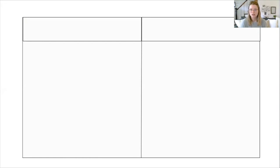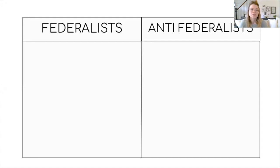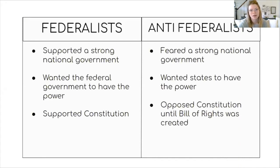We might conclude that a lot of anti-federalists were concentrated in the south, but for the evenly divided or unsettled territories we probably need more information. Now I want you to take your piece of paper and draw a chart — this is called a T-chart. Pause if you need to. At the top, put a side for federalists and a side for anti-federalists.